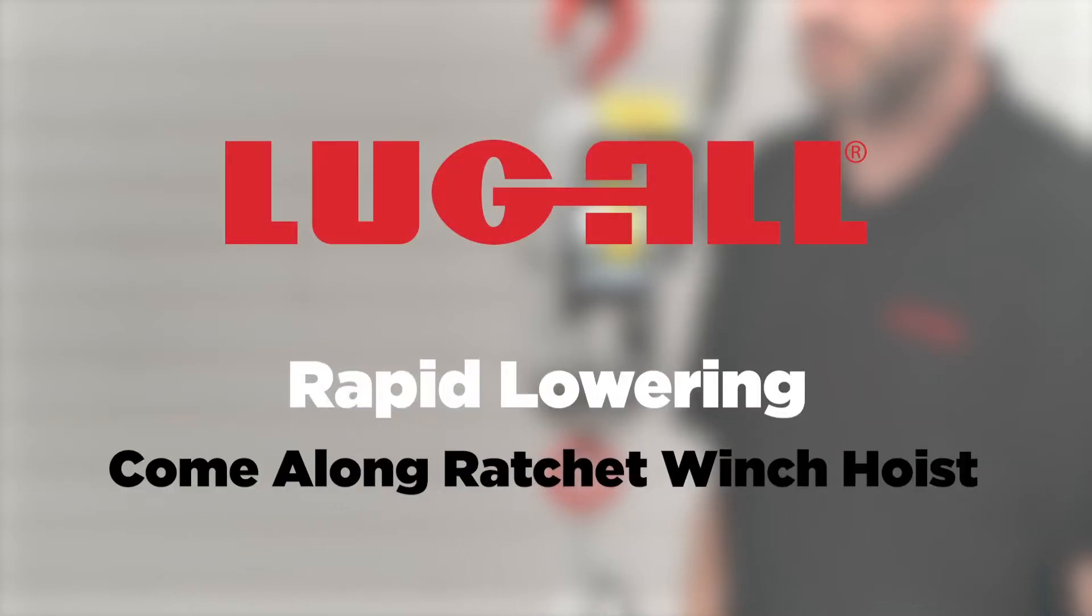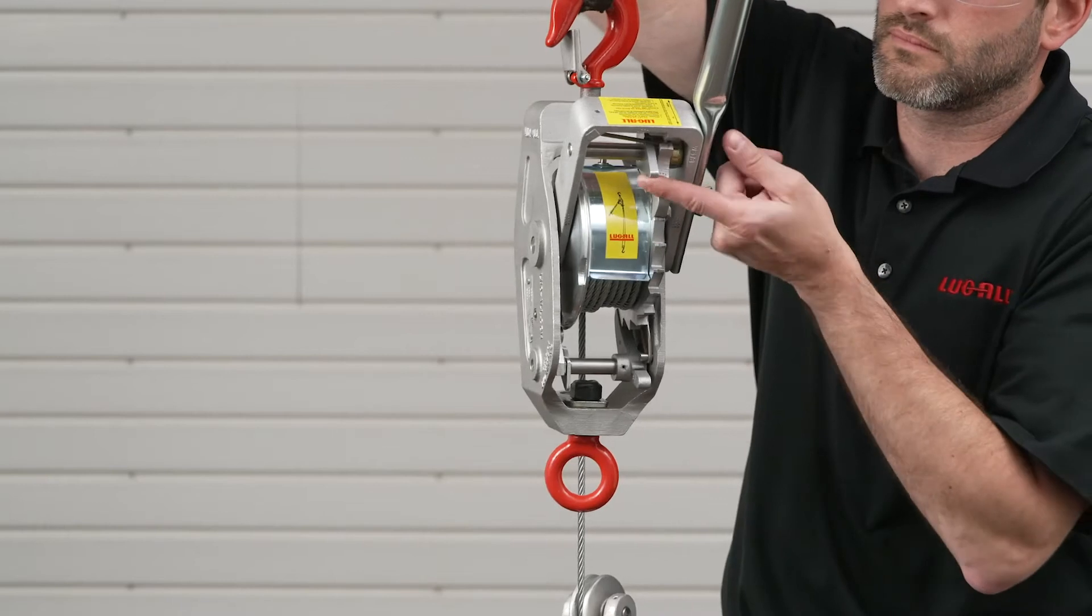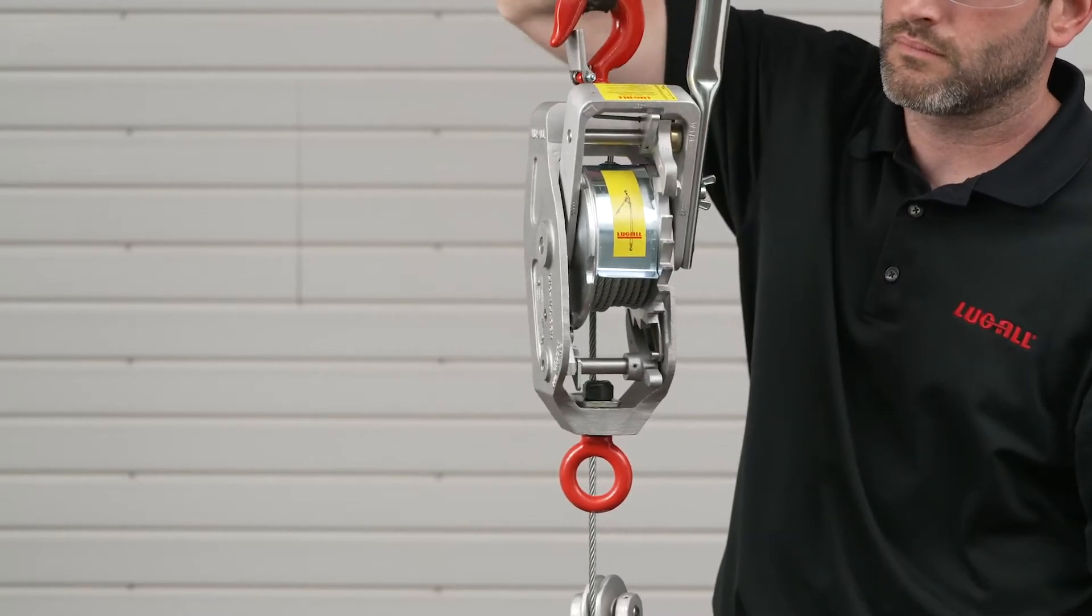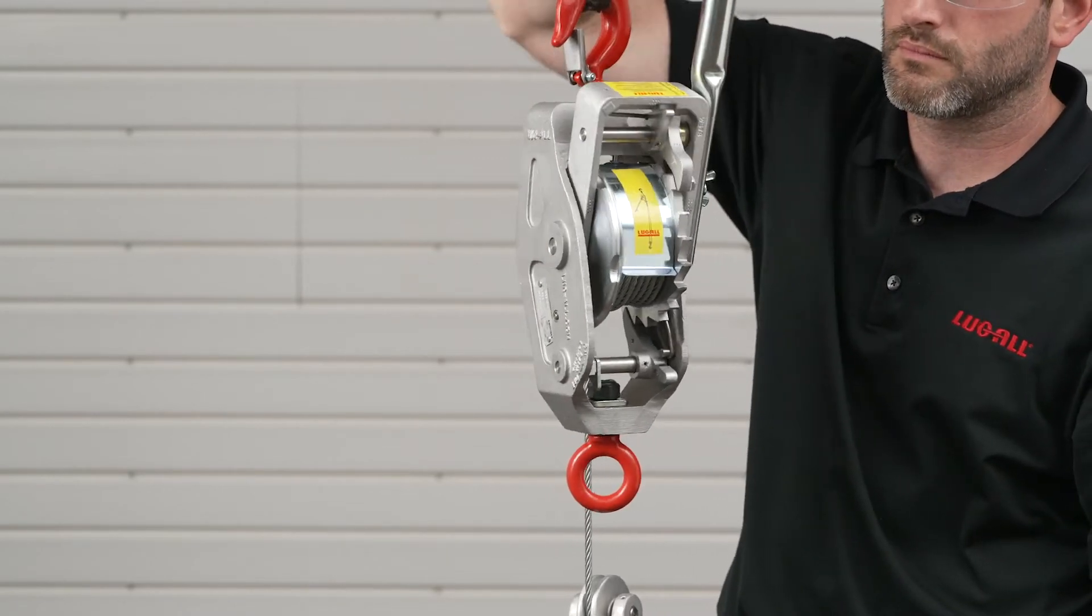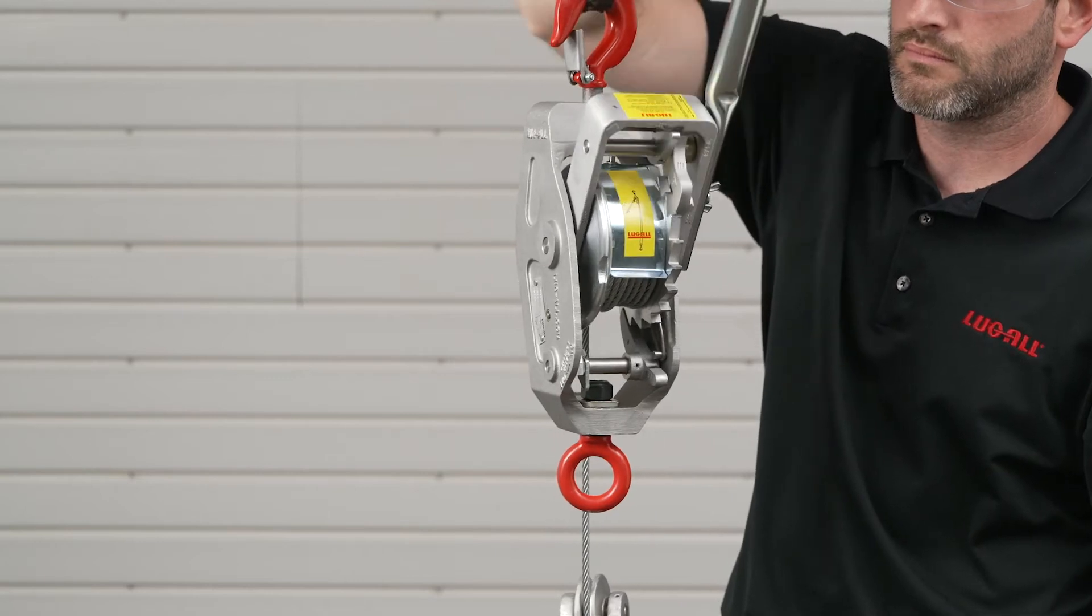Lugall's rapid lowering function is an optional addition to Lugall cable ratchet winch hoists. Standard Lugall winch hoists lower a load using the U-frame pawl, which unspools the wire rope by one ratchet tooth at a time.